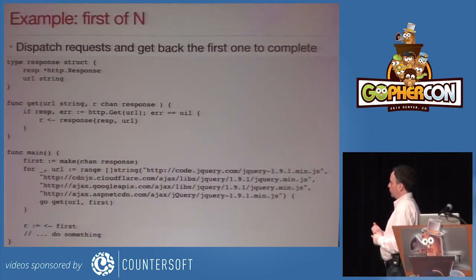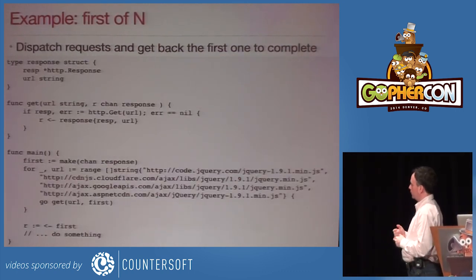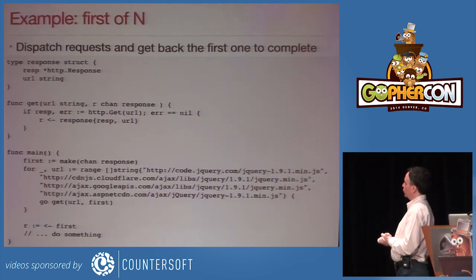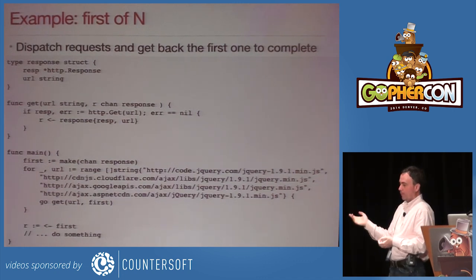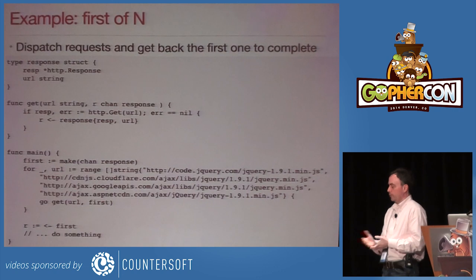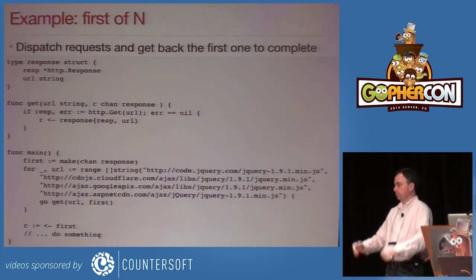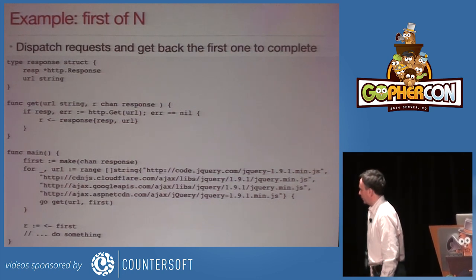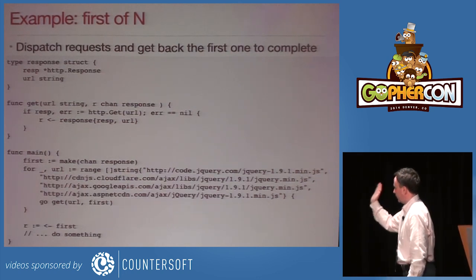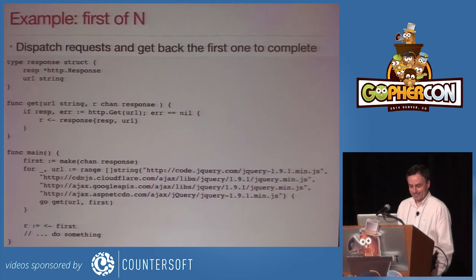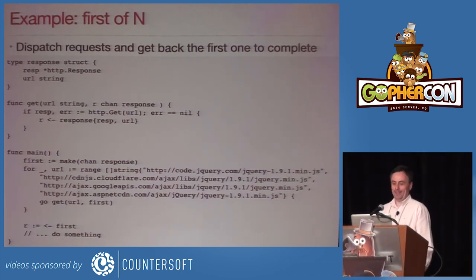Another great example is first-of-N: you want to do N things and take whichever finishes first. This spins up a bunch of goroutines to try to get some URL, they all try to transmit a response, and you just receive the first one. I hope it will be the Cloudflare CDN — I won't run it live just in case it's the Google one.